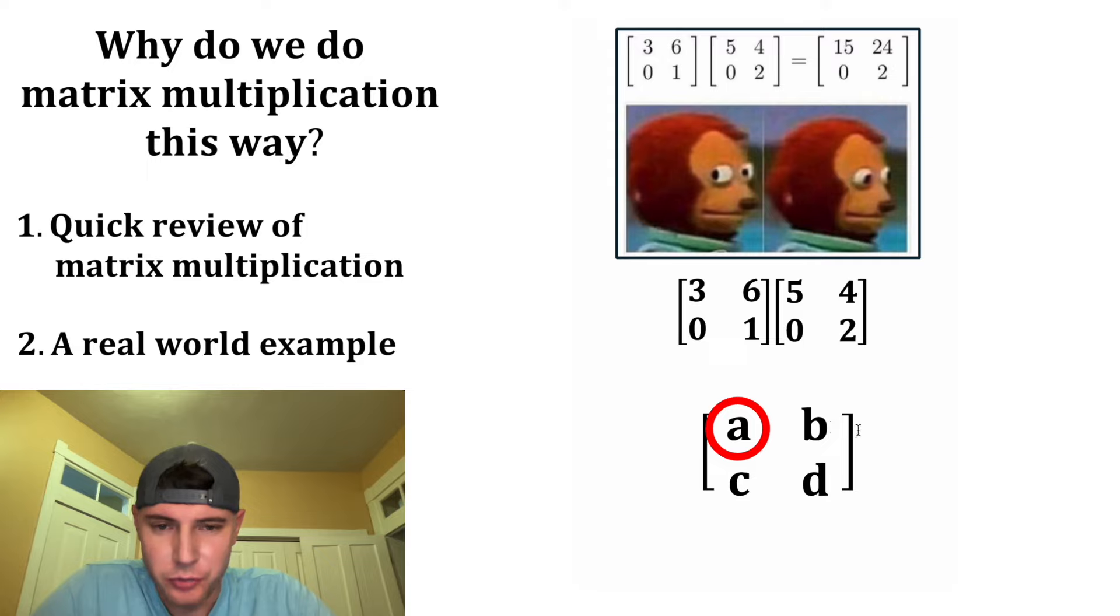This A is located in the first row and the first column. So in this matrix, we're going to take the first row, and in this matrix, we take the first column. And it always works that way. It's the rows of the first, columns of the second. And then we're going to end up doing the three times the five plus the six times the zero. And three times five is 15, and six times zero is zero, so this is 15.